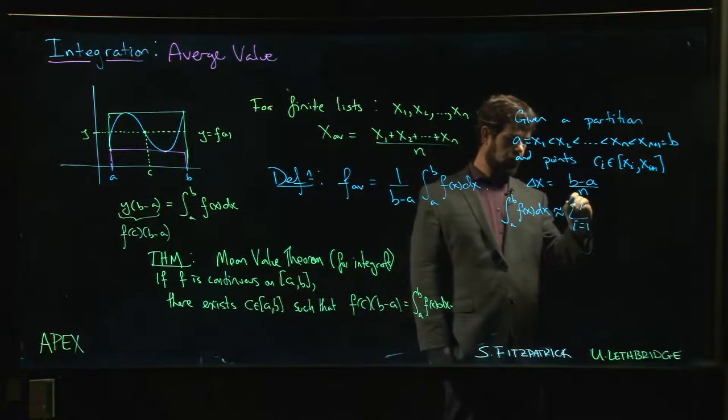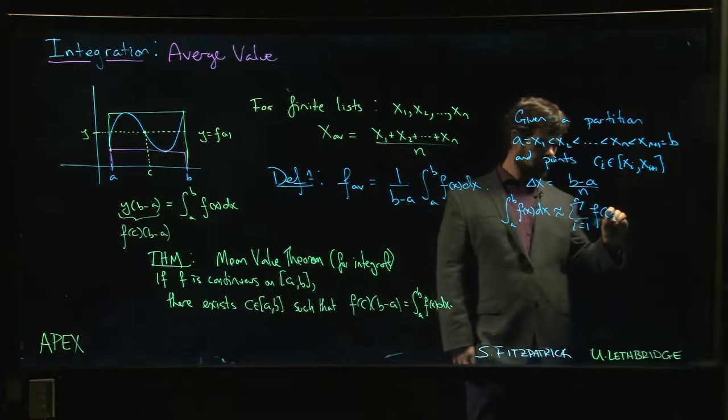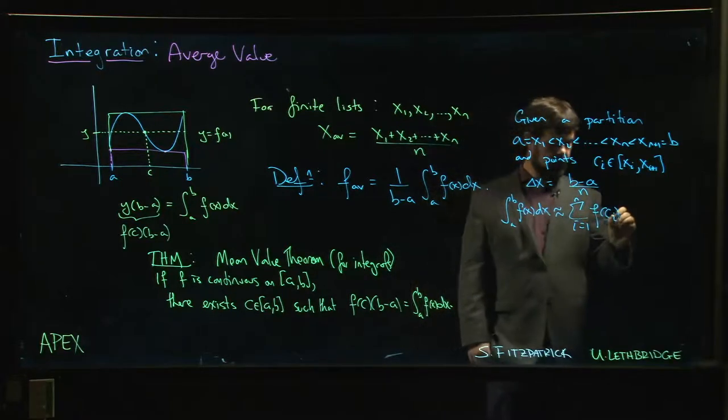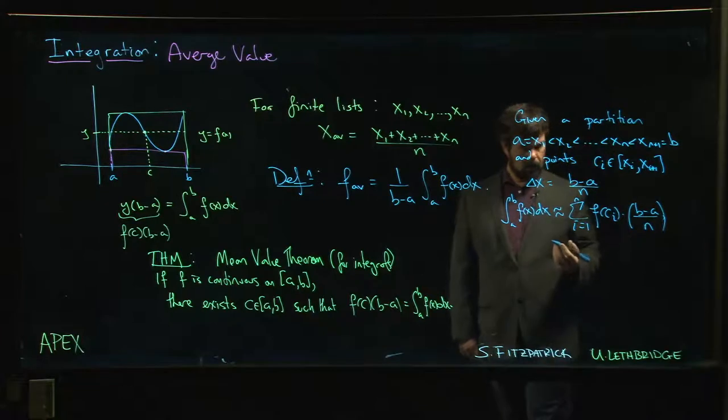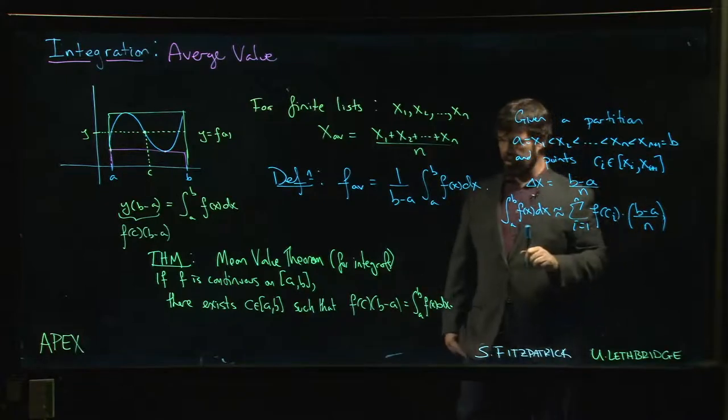...the sum from i = 1 to n of f(c_i) times our delta x, which is (b - a)/n. Now divide both sides by (b - a).